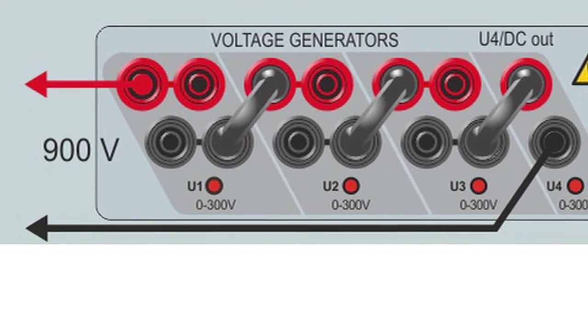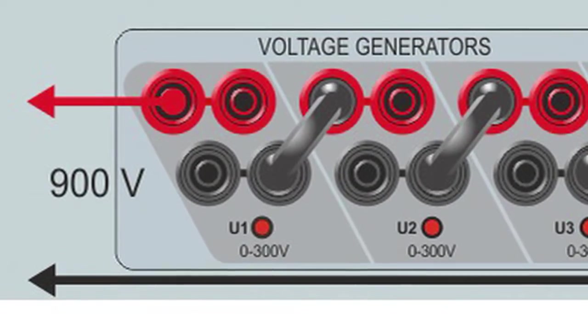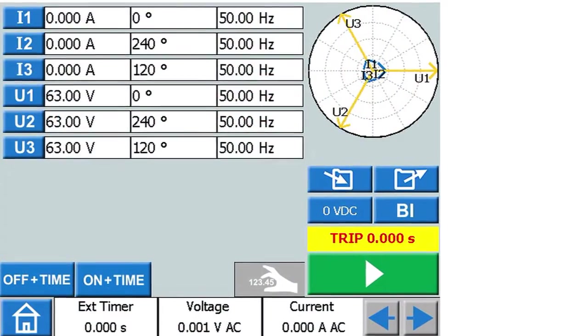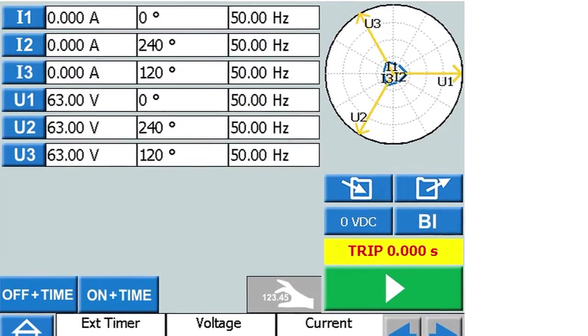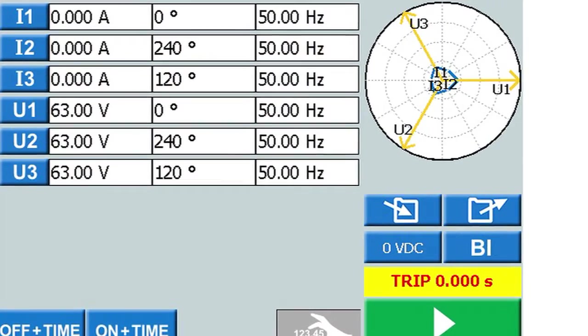All three current and four voltage sources can be individually adjusted with respect to amplitude, phase angle, and frequency. The fourth voltage source allows for testing of numerical relays that need a reference voltage simulating the bus bar.